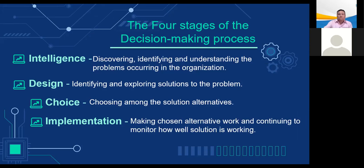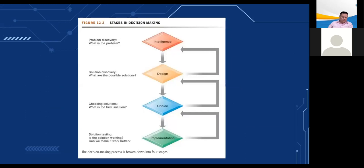The four stages of the decision making process: first, intelligence — discovering, identifying, and understanding problems occurring in the organization; asking why a problem exists, where it is, and what effect it is having on the firm. Second, design — identifying and exploring solutions to the problem. Third, choice — choosing among the solution alternatives. Fourth, implementation — making the chosen alternative work and continuing to monitor how well the solution is working.